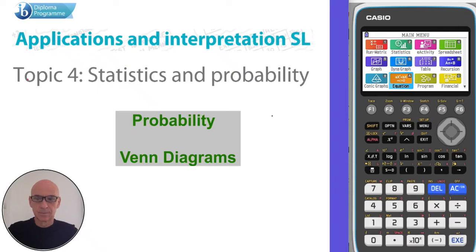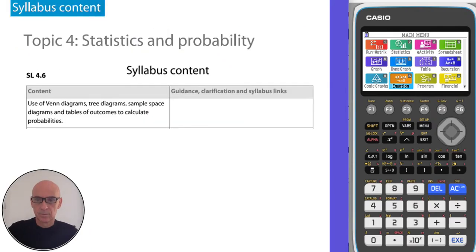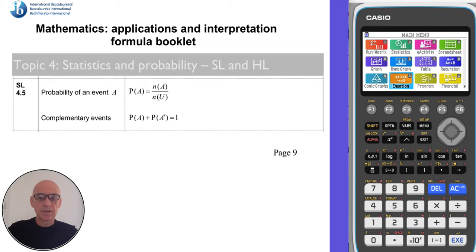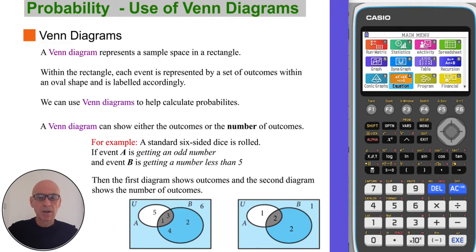Hello. We're going to be using Venn diagrams to calculate probabilities as shown in the syllabus. These are the formulas given in the formula booklet on page 9. A Venn diagram represents a sample space in a rectangle, and each event is represented by an oval inside the rectangle. A Venn diagram can either show outcomes or the number of outcomes.